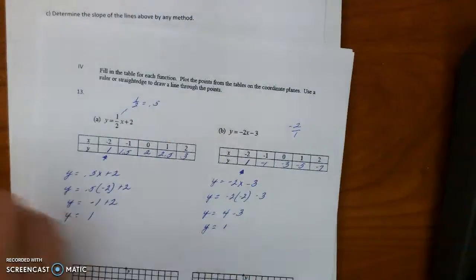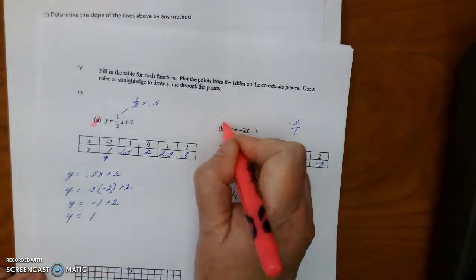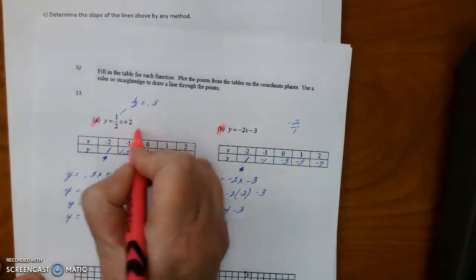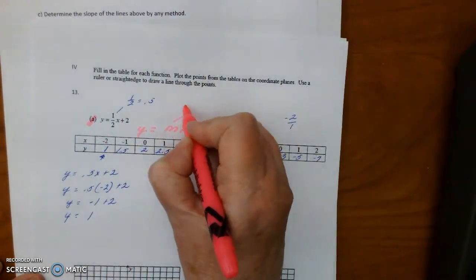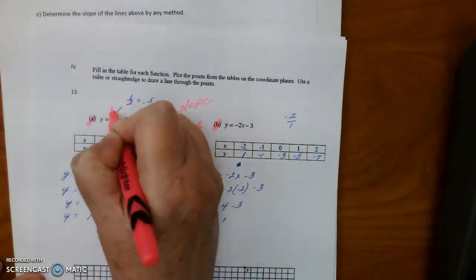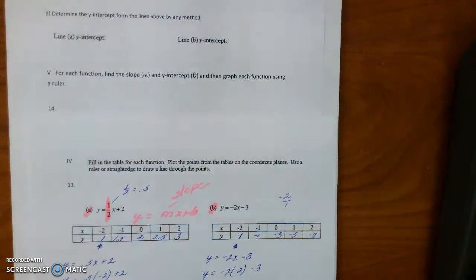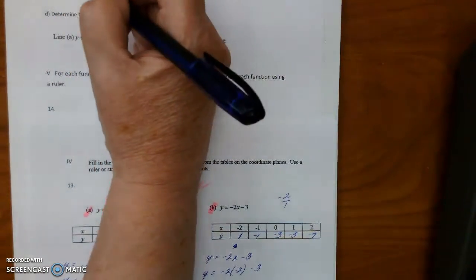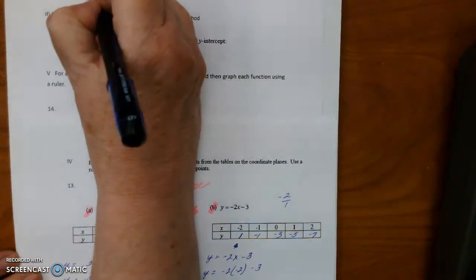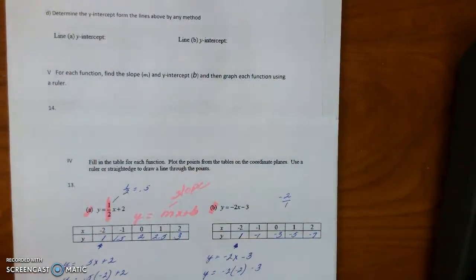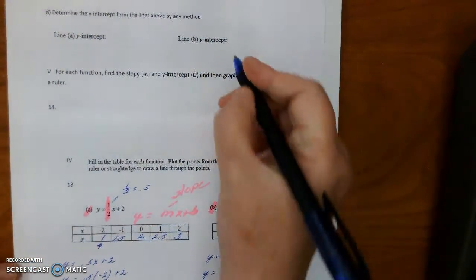Now they want us to give you the slope for this equation, for line A and line B. Now we know that Y equals MX plus B, and we know that M is slope. So the slope for line A is one-half. And the slope for B is negative 2.